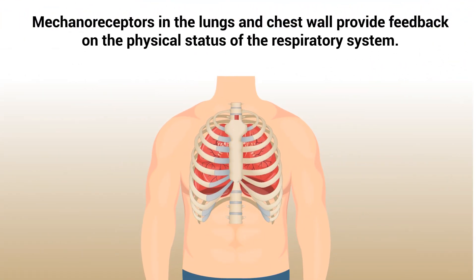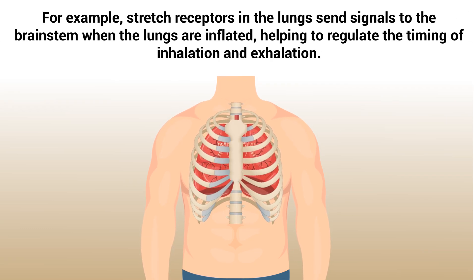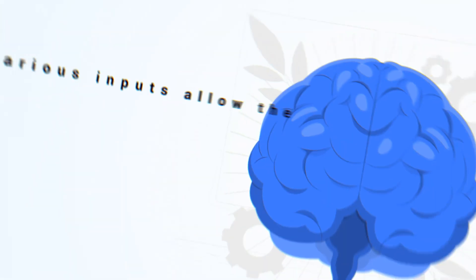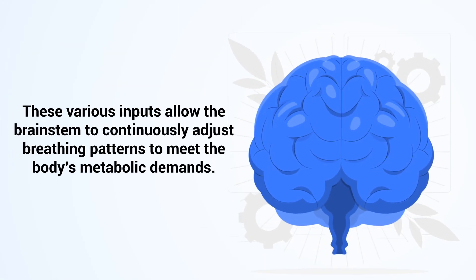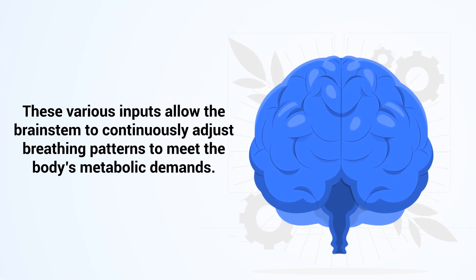Mechanoreceptors in the lungs and chest wall provide feedback on the physical status of the respiratory system. For example, stretch receptors in the lungs send signals to the brainstem when the lungs are inflated, helping to regulate the timing of inhalation and exhalation. These various inputs allow the brainstem to continuously adjust breathing patterns to meet the body's metabolic demands.